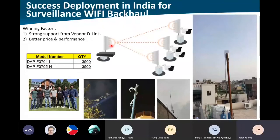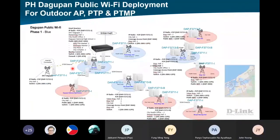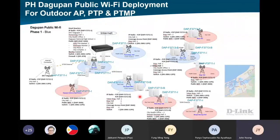Next, we have a success case in India where they used the AP to do PTMP for CCTV — mounting it on buildings across the city to manage all the IP cameras. Another success case is in the Philippines, where they have a project on PTP for smart city. Some areas like city halls can cross over using PTP, and then they can do AP broadcasting for clients — using the DAP-3666 for broadcasting. For the backhaul, they use PTP, and for some areas they use PTMP with one AP to multiple points. All broadcasting is done with the DAP-3666.